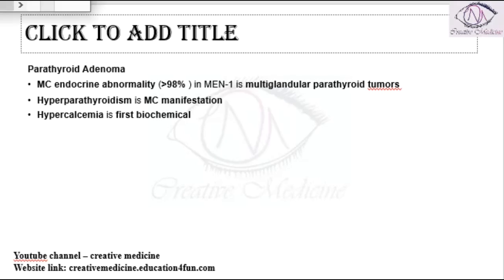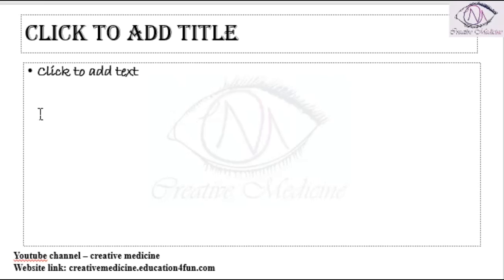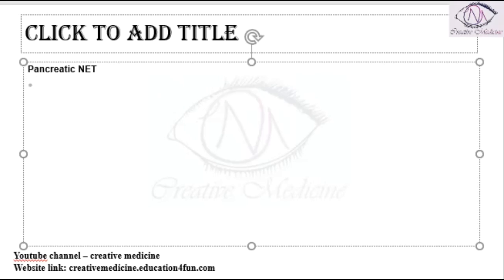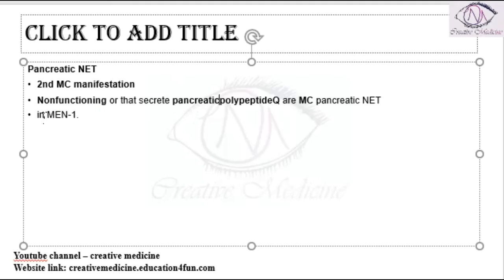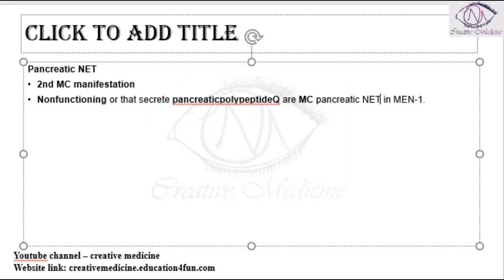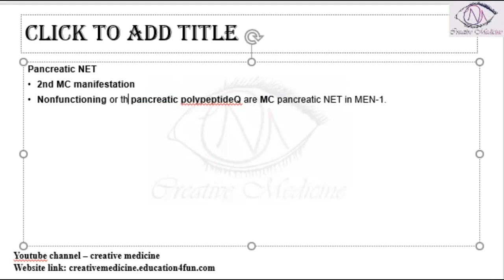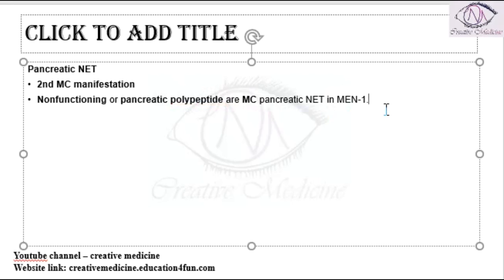The second important component is pancreatic neuroendocrine tumor. It is the second most common manifestation in MEN 1 syndrome, next to parathyroid adenoma. The most common pancreatic neuroendocrine tumor is non-functioning pancreatic polypeptide. So the most common pancreatic neuroendocrine tumor is non-functioning or pancreatic polypeptide.